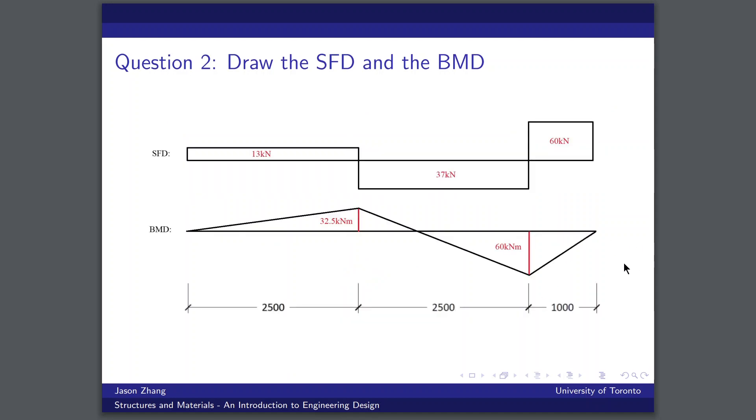So now we can draw our shear force diagram. We recall that there was a reaction force of 13 kilonewtons at this leftmost edge of the beam. And then we had a point load of 50 kilonewtons, which creates a total shear force of minus 37 kilonewtons. And then finally a reaction force of 97 kilonewtons from the roller and another point load of 60 kilonewtons. So it balances out to zero at the ends.